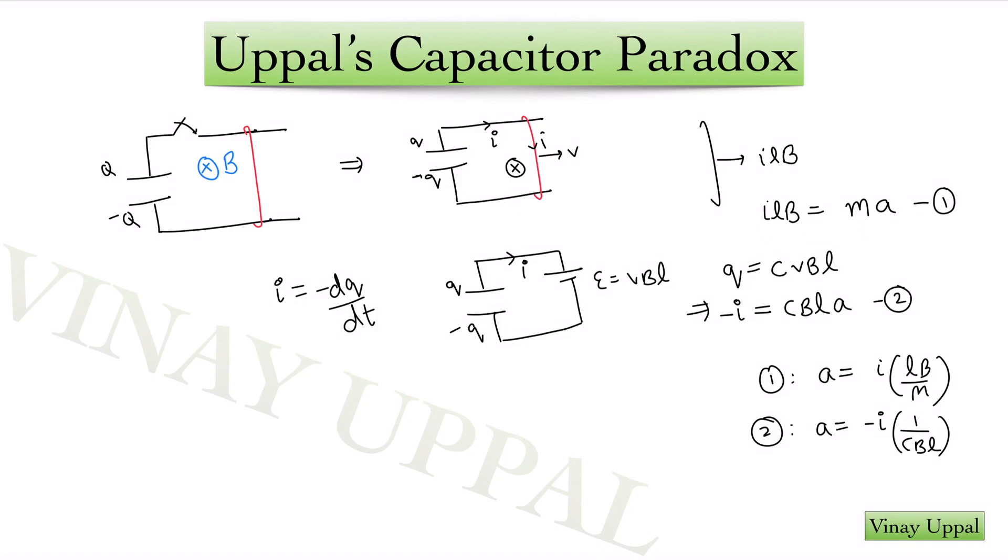On the other hand, if we write the circuit equation, there will be an induced EMF across the rod, which will be equal to V B L. And according to that, you will have charge as C times V B L. And differentiating it, you will get the current as C B L A, where A is the derivative of velocity.